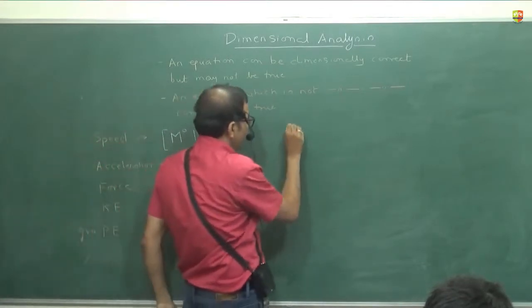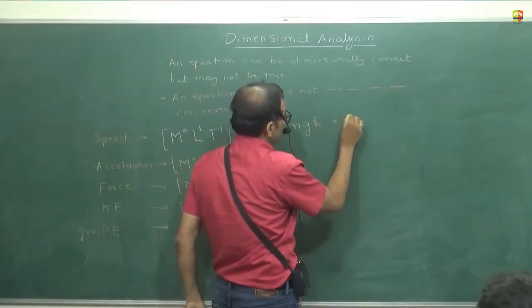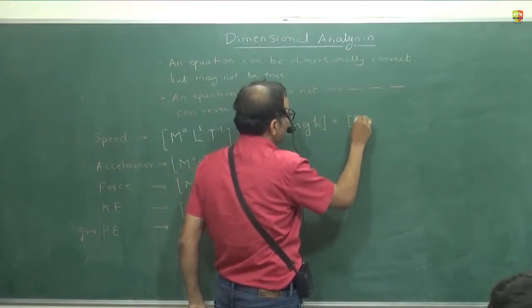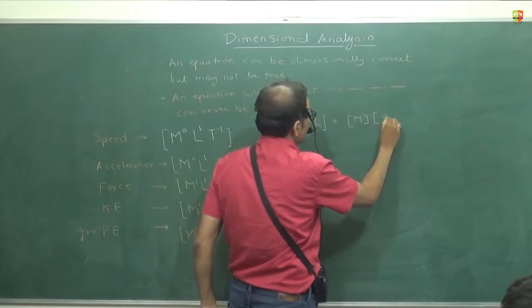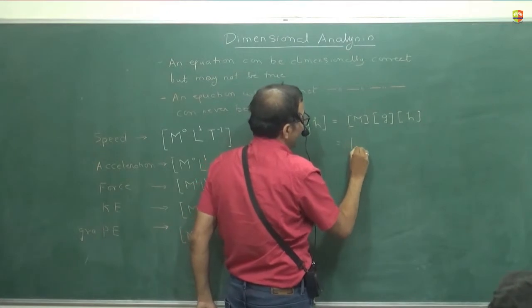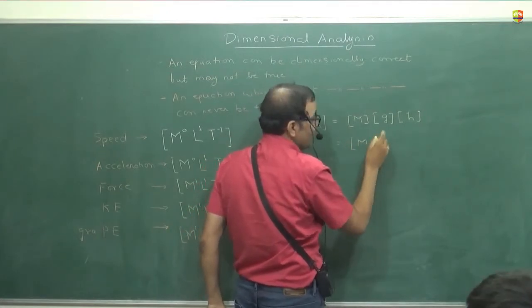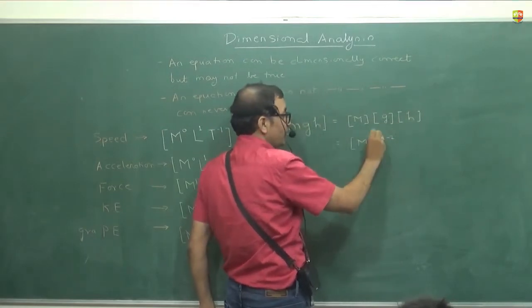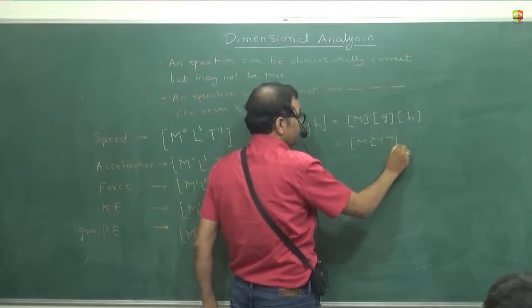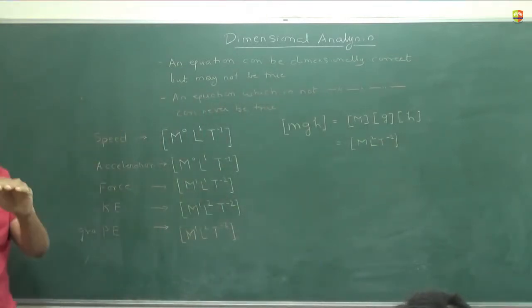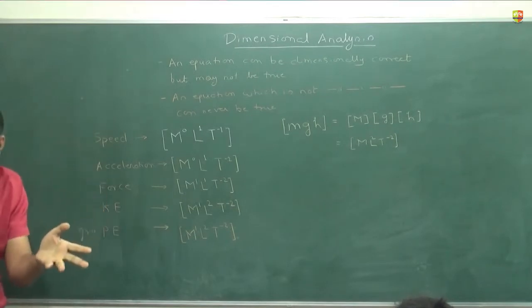You can check, you know. Energy is M, G, H. So, this is dimension of, dimension of M, G, H is equal to dimension of mass into dimension of G into dimension of H. Dimension of mass is M. Dimension of G is acceleration. L, T, minus 2. Dimension of H is L. When you multiply, it becomes L square. Fine. Now, we know that one energy can get converted into another form of energy. We know this or not?